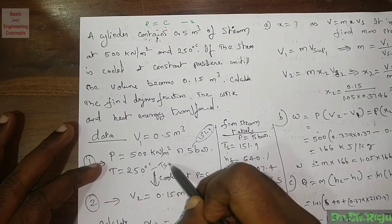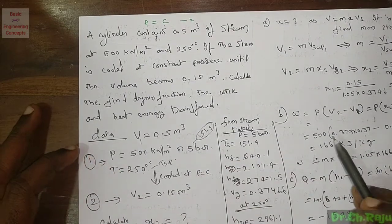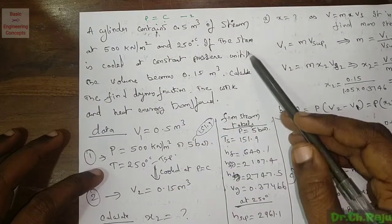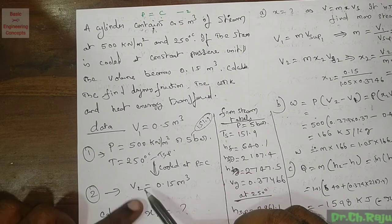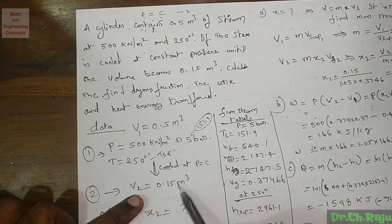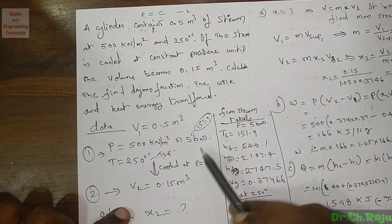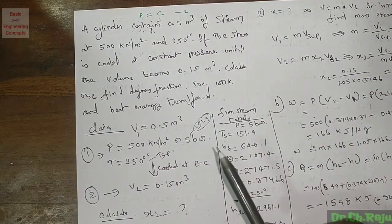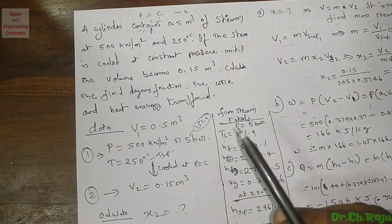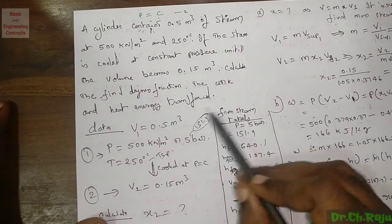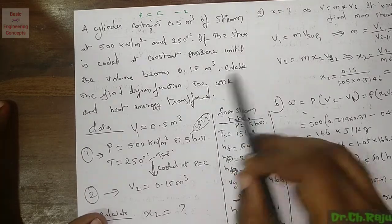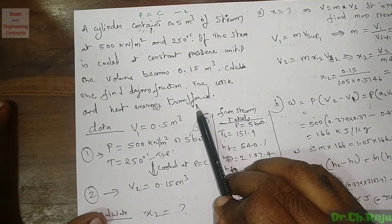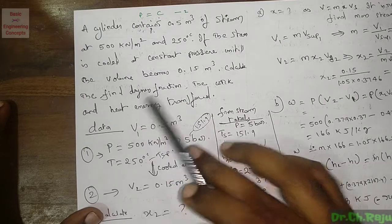The second condition is that the steam is cooled at constant pressure until volume V₂ = 0.15 m³. Mass is not given, so before calculating dryness fraction, work done, and heat transfer, we must first find the mass of steam.